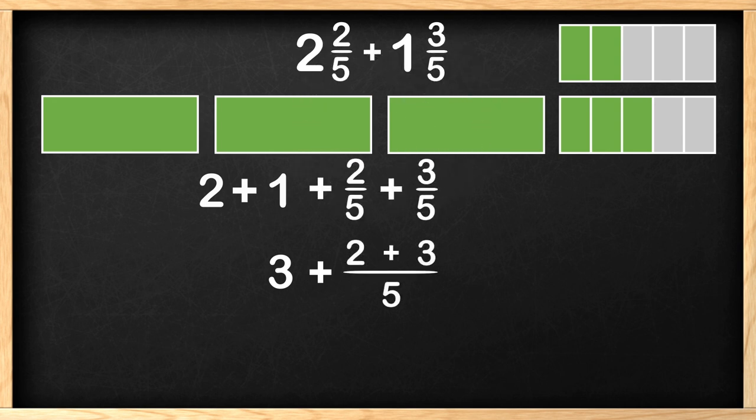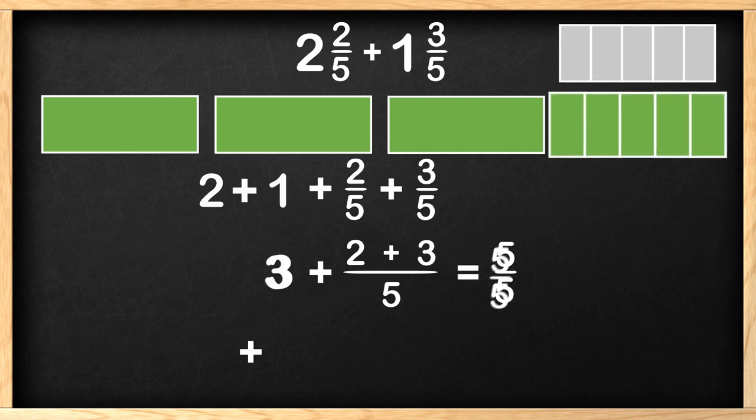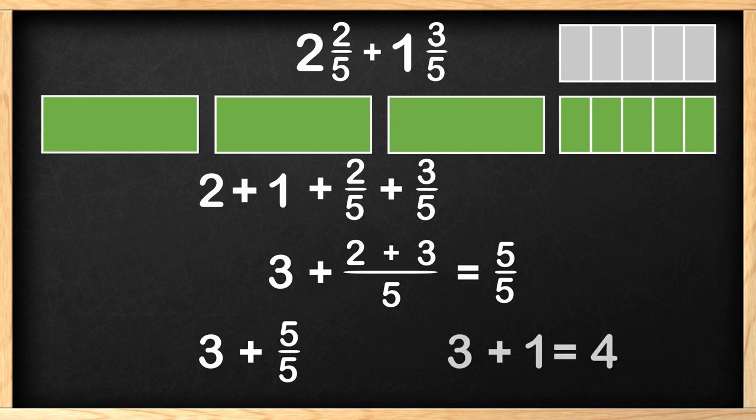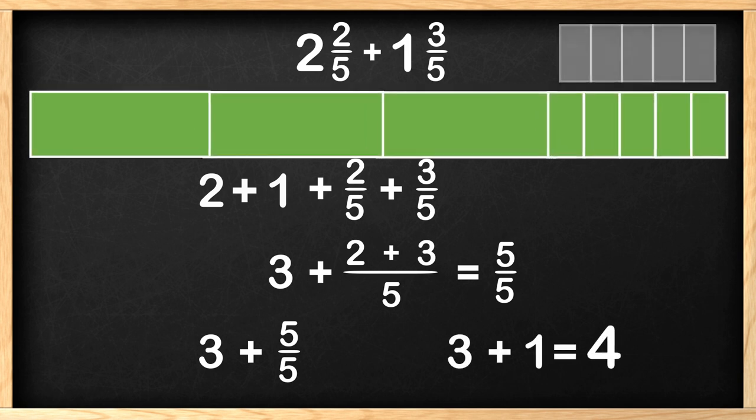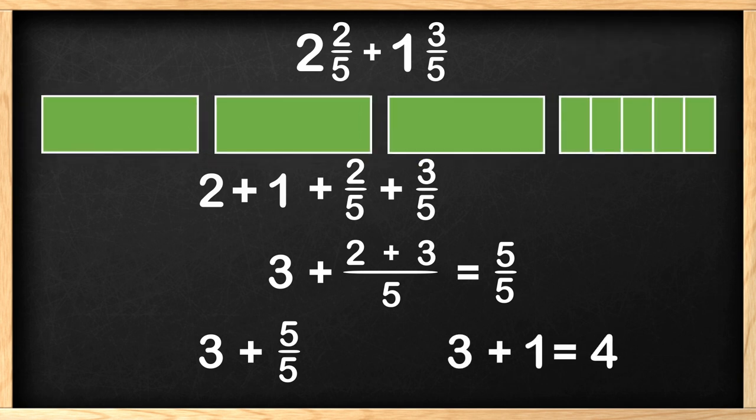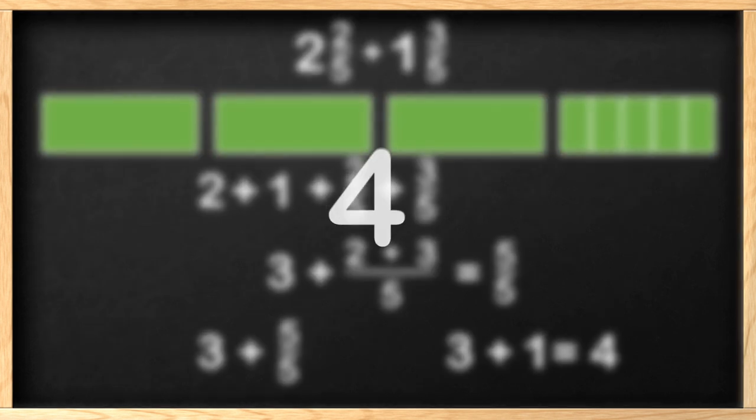All our problems today have the same denominator, so that will make it easier. We add the numerators or the top numbers together in the fractions. So we add 2 fifths plus 3 fifths equals 5 fifths, or 1 whole. All together we have 4 wholes. So the answer to 2 and 2 fifths plus 1 and 3 fifths is 4. Awesome! Are you ready to try another problem?